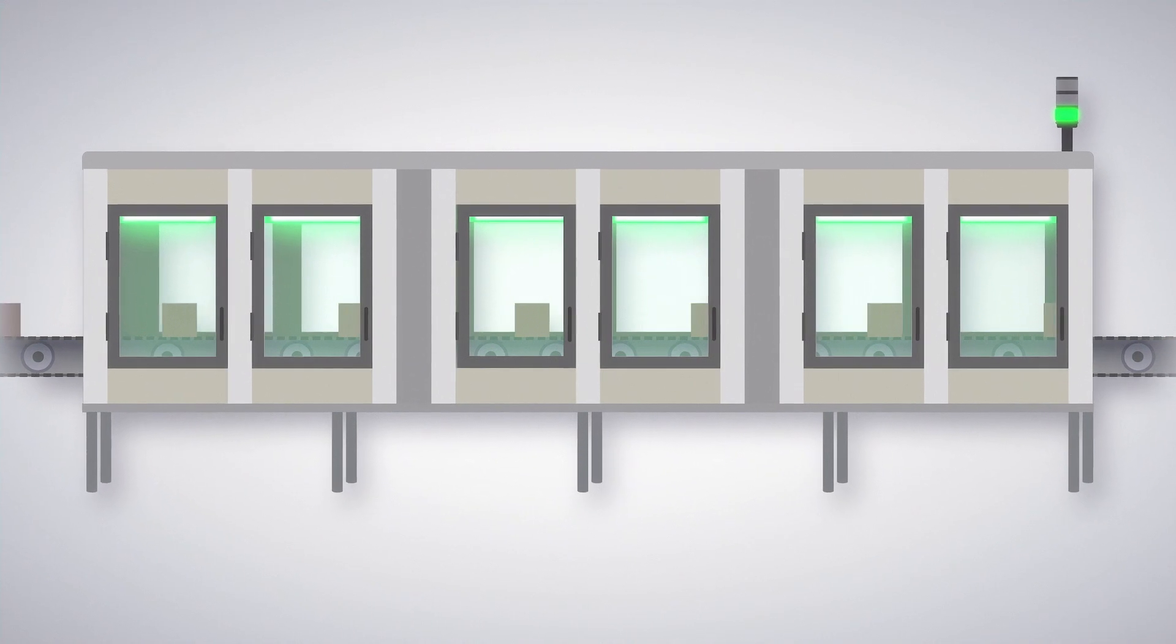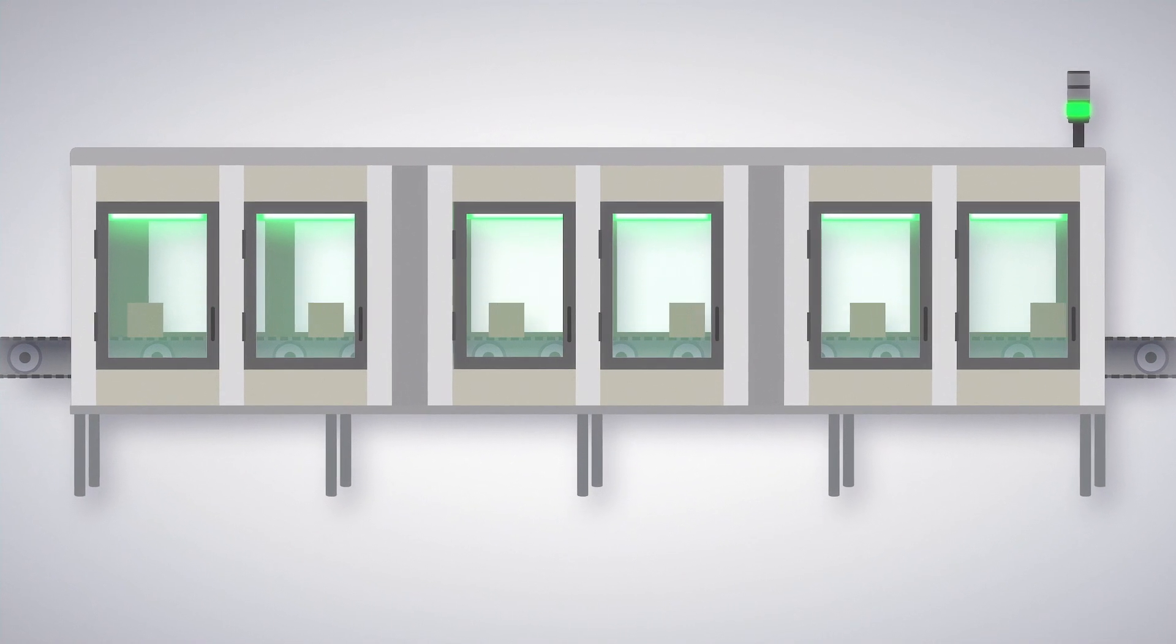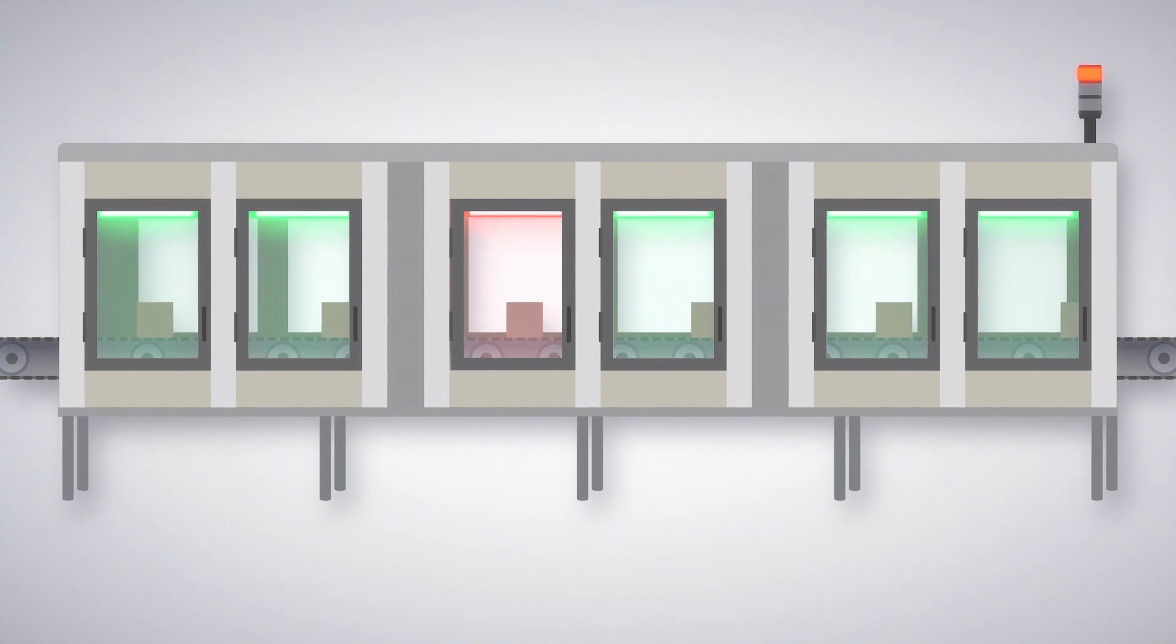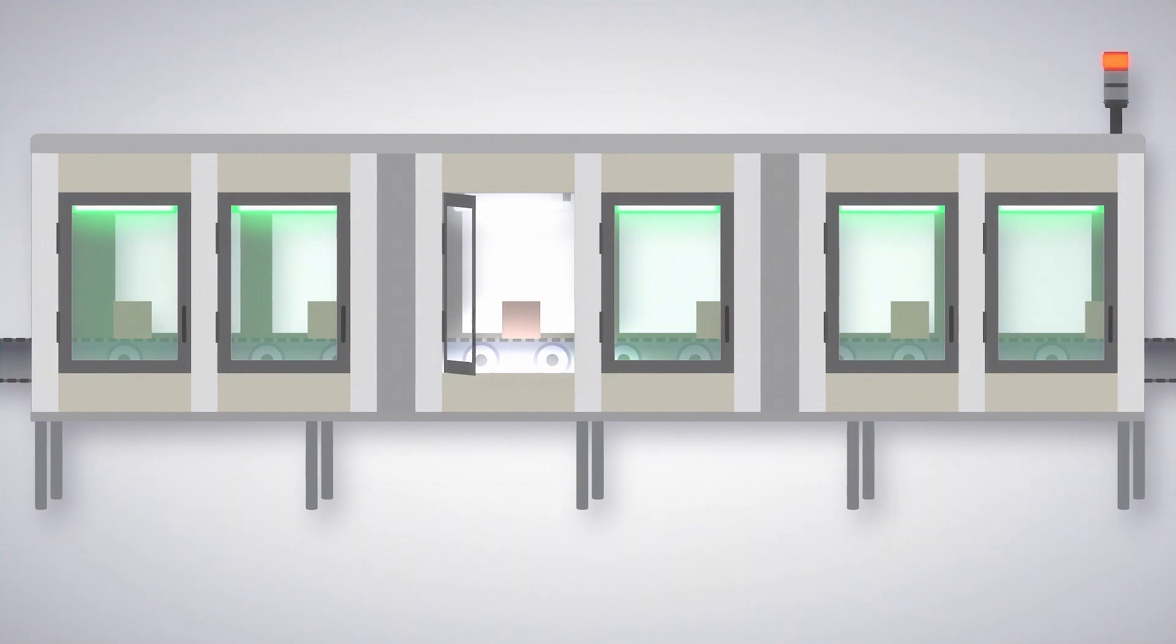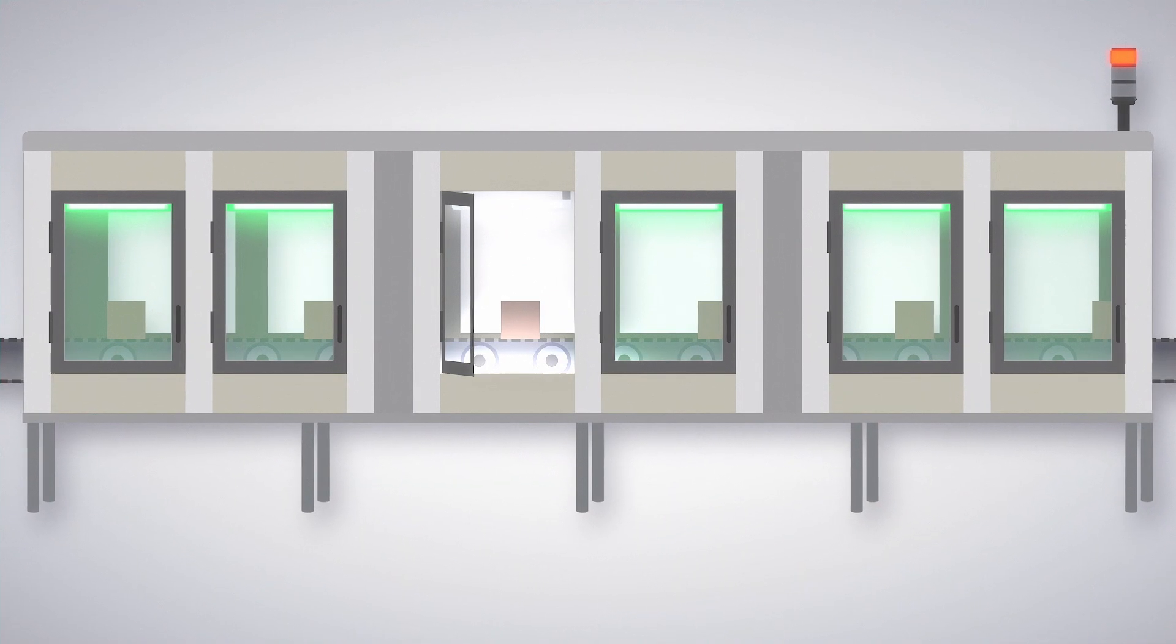EasyStatus can also be used to pinpoint specific areas of the machine that need attention by illuminating the problem zone in red. When an operator opens the door to investigate, the same light switches to white task lighting for quick troubleshooting and maintenance.